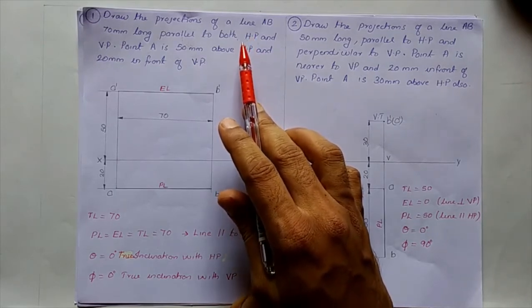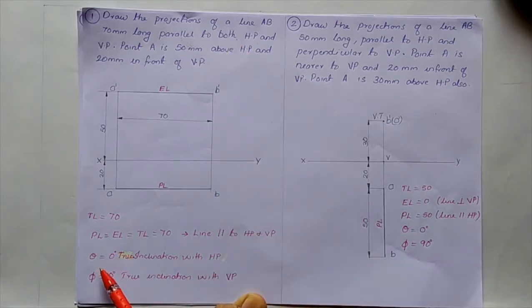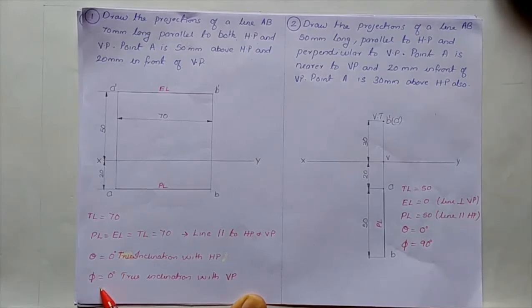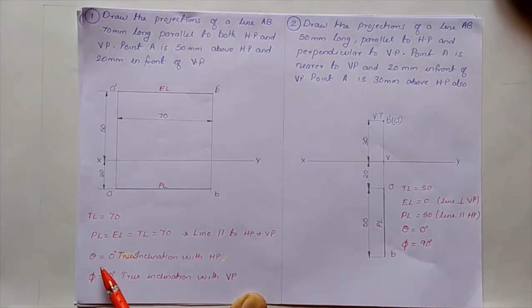The inclination with respect to HP is denoted by the letter theta. Here we don't have any inclination with respect to HP, so the value of theta is 0. The inclination with respect to VP is denoted by the letter phi. Here we don't have any inclination with respect to VP, so phi is also 0. True length is 70 mm, theta = 0°, phi = 0°.